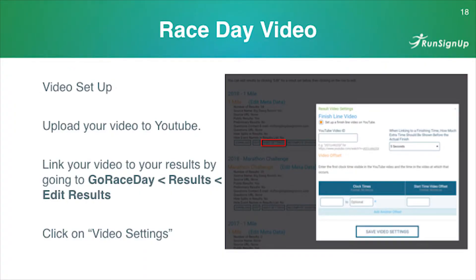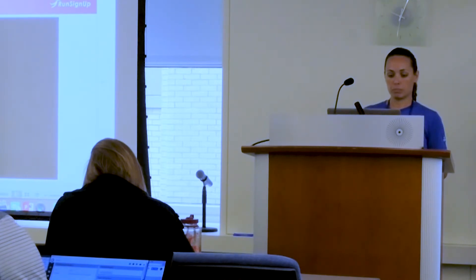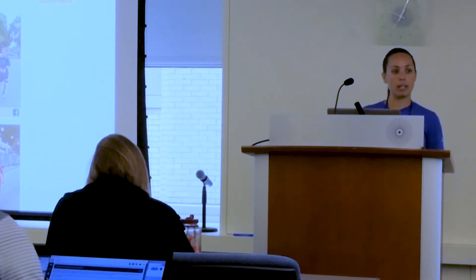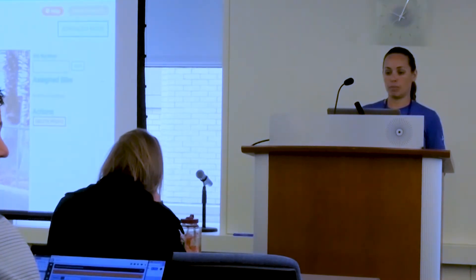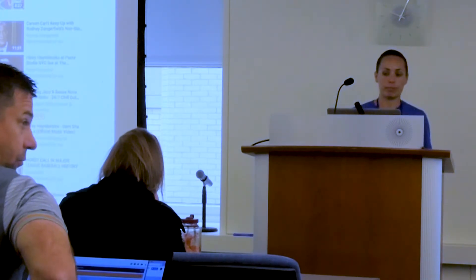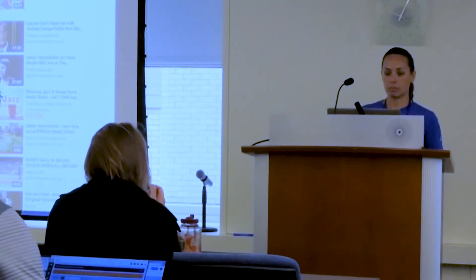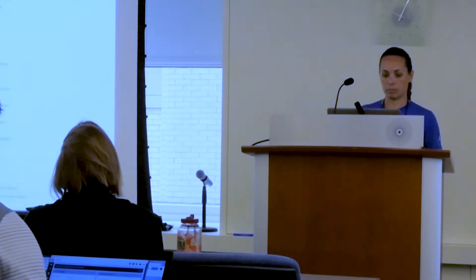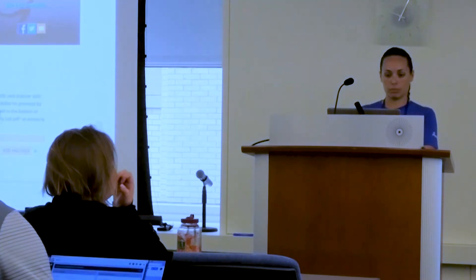Race day video is a really neat feature that not a lot of people use. You upload your video to YouTube and link it to your results by going to Race Day, Results, Edit Results, then Video Settings. One caution: be careful about audio rights — if there's audio in the video that you don't own the rights to, YouTube may flag it. It's recommended to mute or strip the audio before uploading.